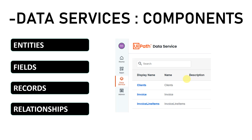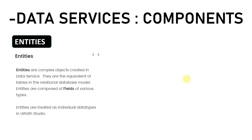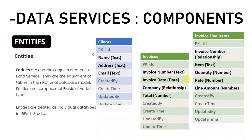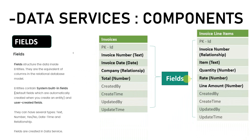The first component is entity. Entities are the complex objects of data services and are equivalent to tables in an RDBMS. If you are familiar with SQL, these are like tables. In our example, client, invoices, and invoice line items will be our entities, similar to database tables.